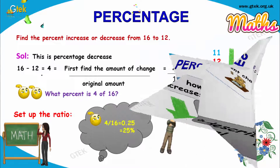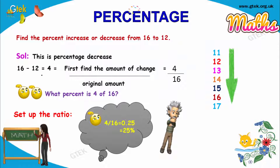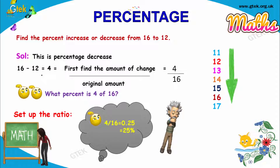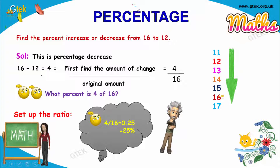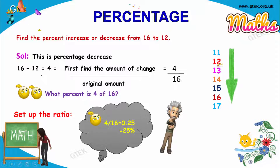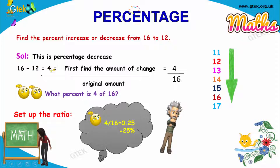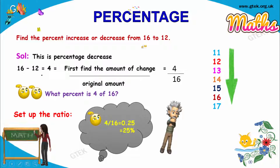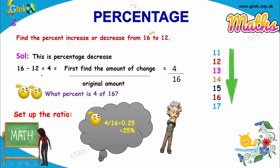Let's go with the problem. Find the percent increase or decrease from 16 to 12. The change in value is from 16 to 12. So, 16 minus 12 is equal to 4. This is the amount — the number change is 4. The original value is 16. From 16 it goes to 12, so it is decreasing.